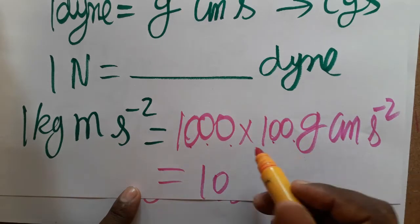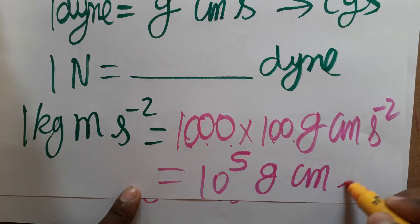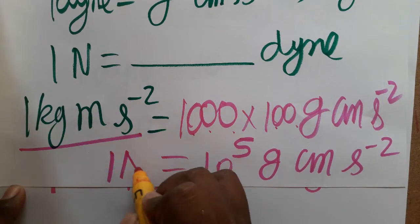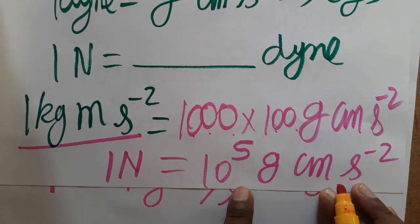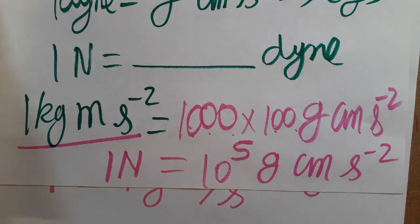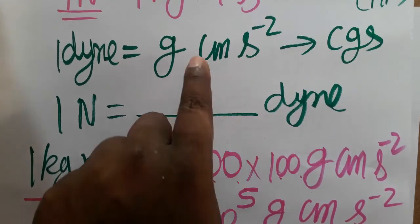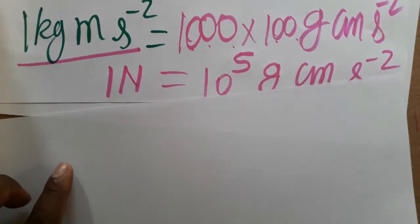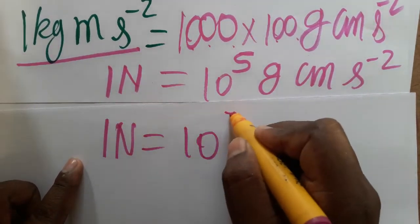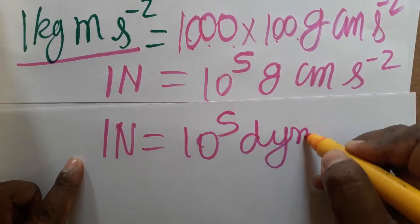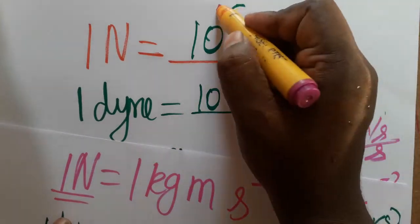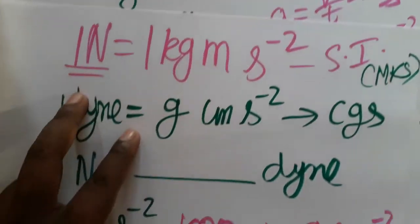1000 × 100 = 10⁵, so we get 10⁵ g·cm·s⁻². Since g·cm·s⁻² is the unit dyne, we conclude: 1 newton = 10⁵ dyne. So the answer to our first question is 1 newton equals 10 to the power 5 dyne.